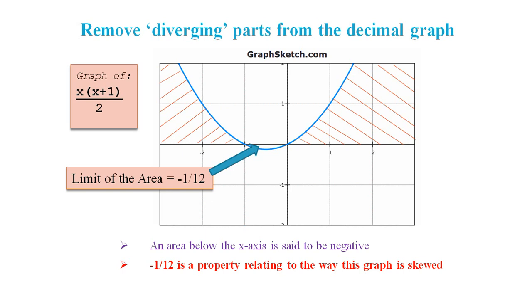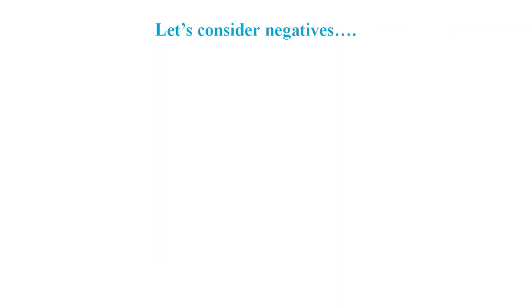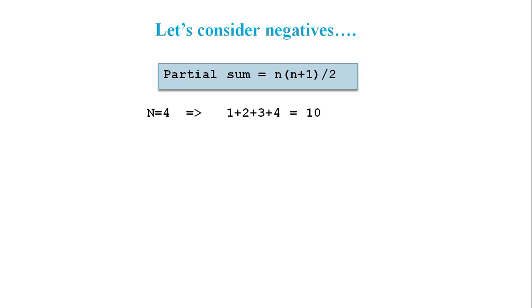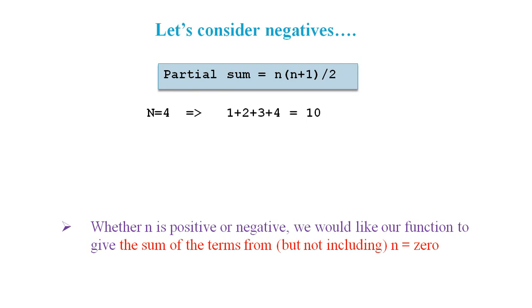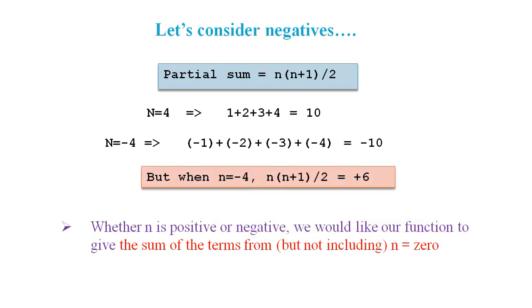So let's take negatives into consideration. If we use our partial sum expression to calculate the sum up to the fourth term, then we get the correct result of 10. The problem is we have not defined what should happen if we use negative values for n. The obvious choice is to aim for symmetry. With symmetry, if we plugged -4 into our function, we should get a result of -10. But as it stands, if we plug -4 into our function, we get +6. This is due to the skew we mentioned earlier.